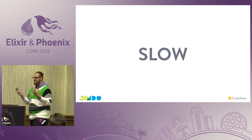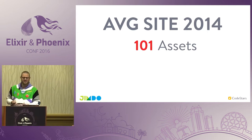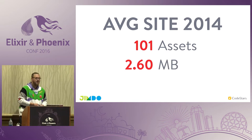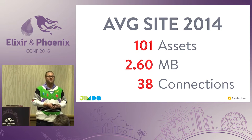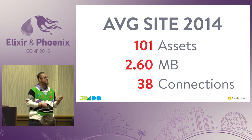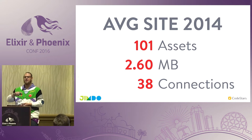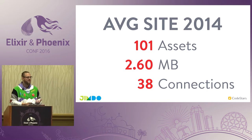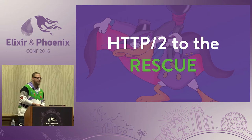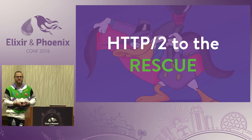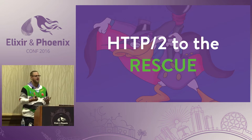The web is slow for multiple reasons. If you take a look at an average website, two years ago it had 101 assets, totalling 2.6 megabytes, shared over 38 connections. The connections made the website slow because HTTP runs over TCP, and on TCP you have this handshake process — a ping back and forth at least three times, even more on encrypted connections. The IETF knew about this almost 10 years ago.